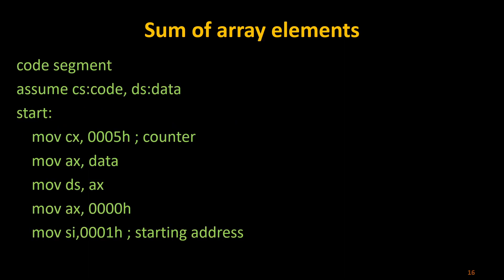Next we move into the code segment. As in previous experiments, we prepare our code segment — it starts with the name 'code segment', then ASSUME CS equal to code. Since we also have a data segment, we specify DS equal to data, which is your representation of the data segment. After that we start the coding.